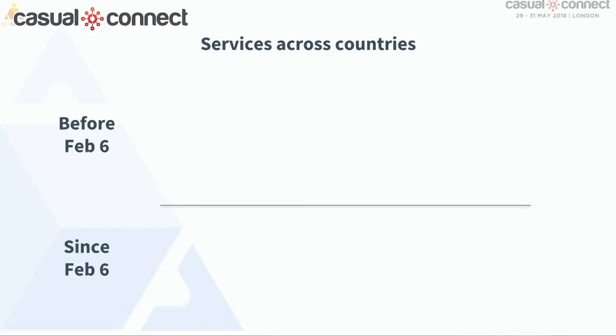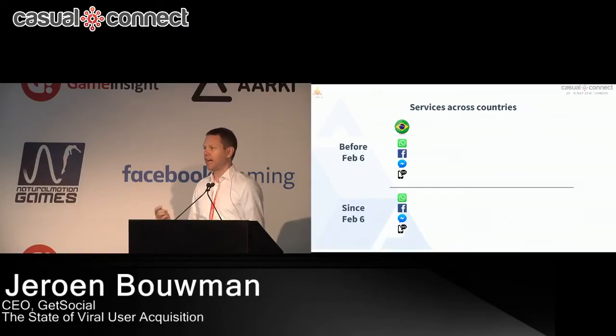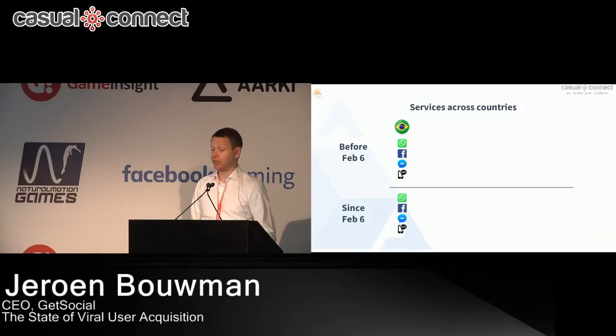Looking at different countries, it's important to have a variety of services that you offer to your customers to be able to share, because services differ across countries. In Brazil, WhatsApp was always the biggest. WhatsApp had a 56% market share and Facebook had a 40% market share in terms of overall sharing. After February 6th, WhatsApp is now at 86% with Facebook at 10%. You can see how the shift happened. It's important to be aware of these different trends in different territories and offer localized invite text.